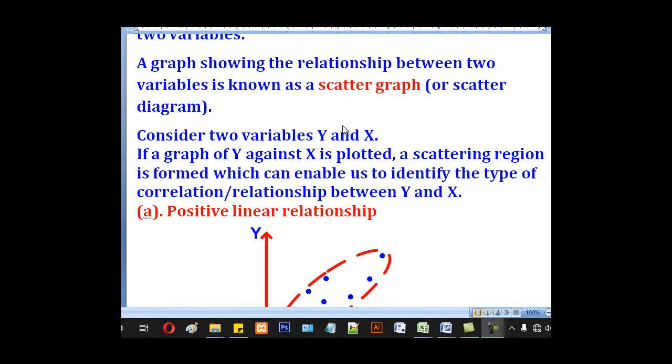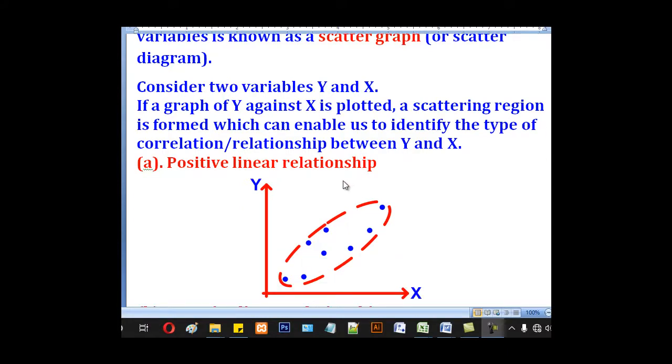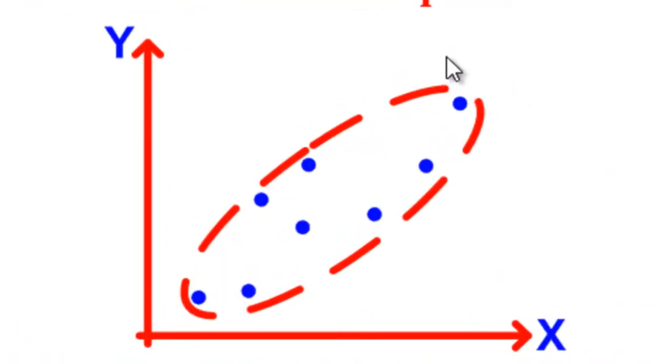So if you have two variables, Y and X, a graph of Y against X which is plotted will show the relationship between the two variables. So there are three kinds of relationships.